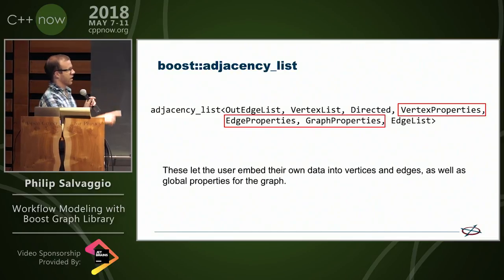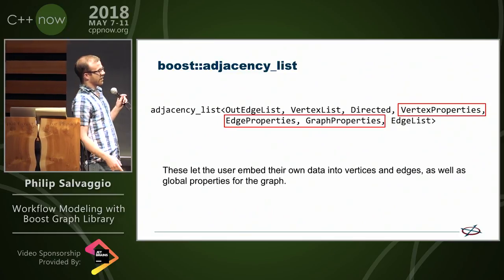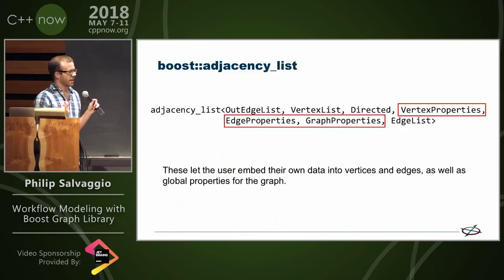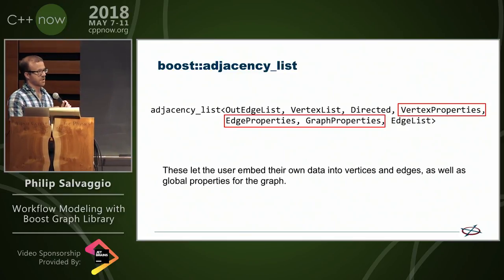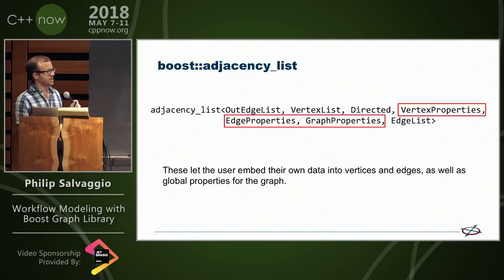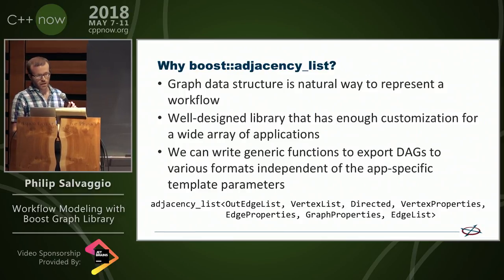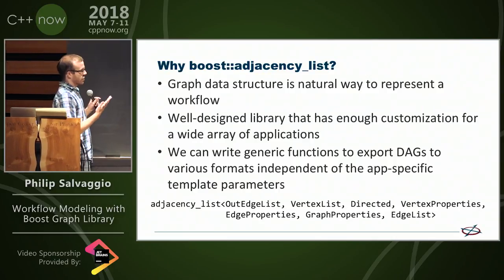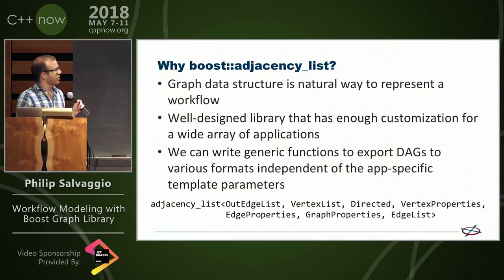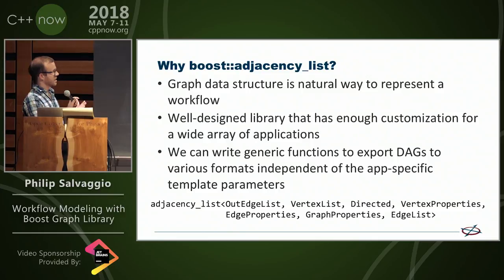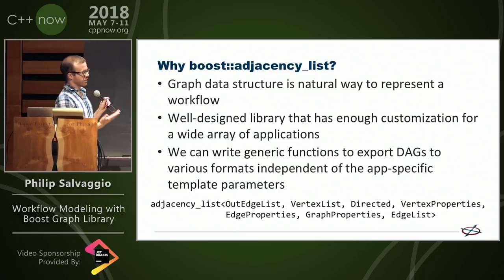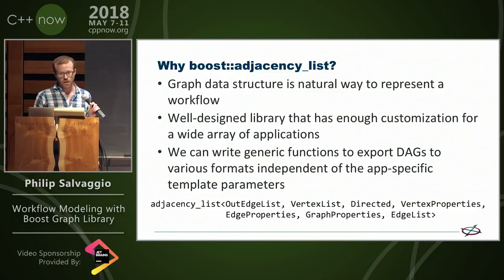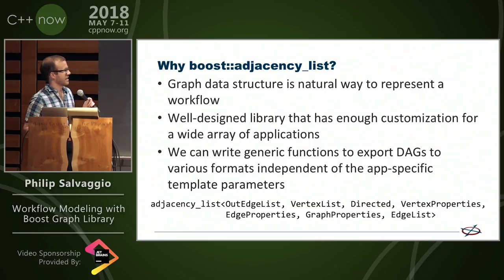These three are kind of the most powerful ones. They let the user embed their own objects into the vertices, the edges, and global properties of the graph. The graph data structure is a really good way to represent that workflow. It's a well-designed library that lets you customize. We also write generic functions to export these DAGs to various formats that let us execute them.